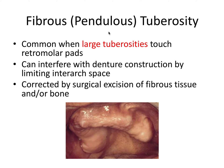Next is a fibrous or pendulous tuberosity. The tuberosity is the posterior region of the maxillary edentulous alveolar ridge — similar to the retromolar pad of the lower arch. A fibrous or pendulous tuberosity is common when large tuberosities — anatomically, genetically large — touch the retromolar pads. This can interfere with denture construction by limiting inter-arch space. If these extend far and contact the retromolar pad at closure, there's not enough room for the acrylic and teeth. This can be corrected by surgical excision of the fibrous tissue or reducing the underlying bone.